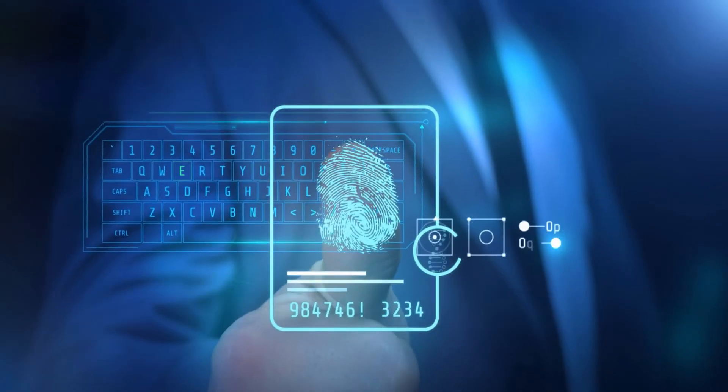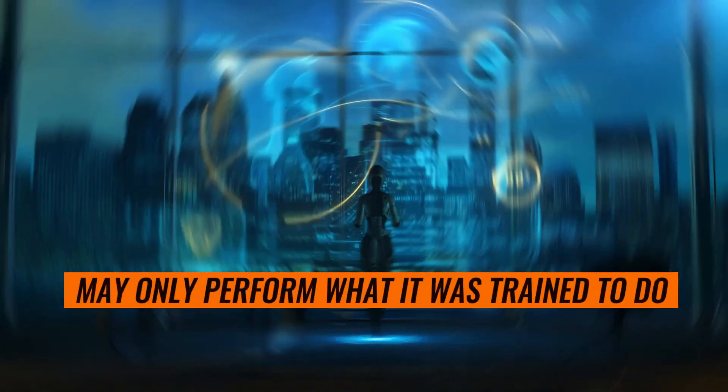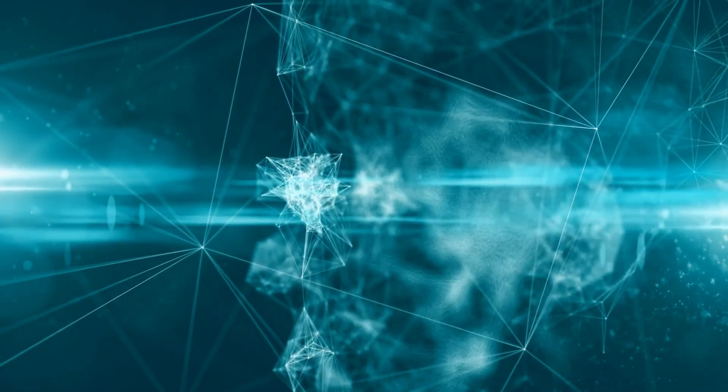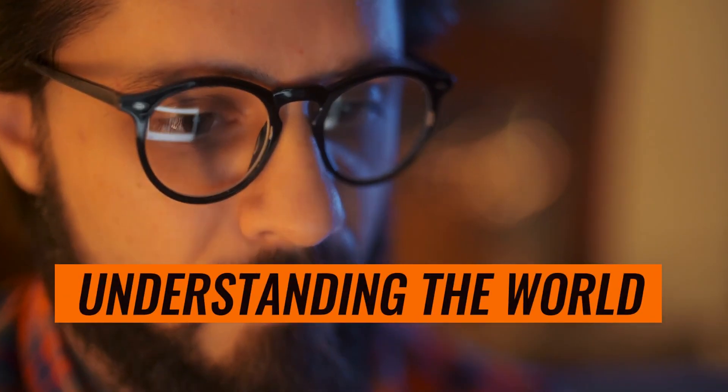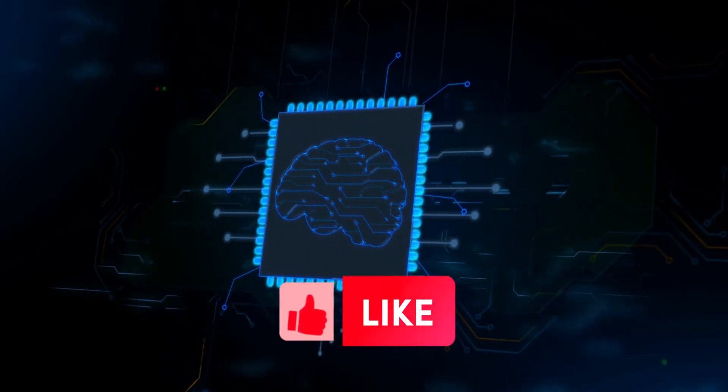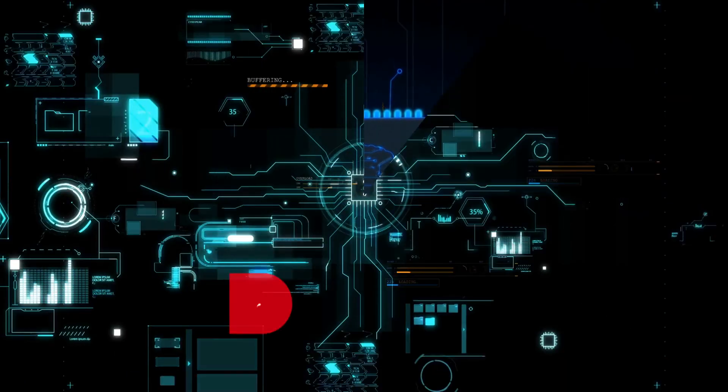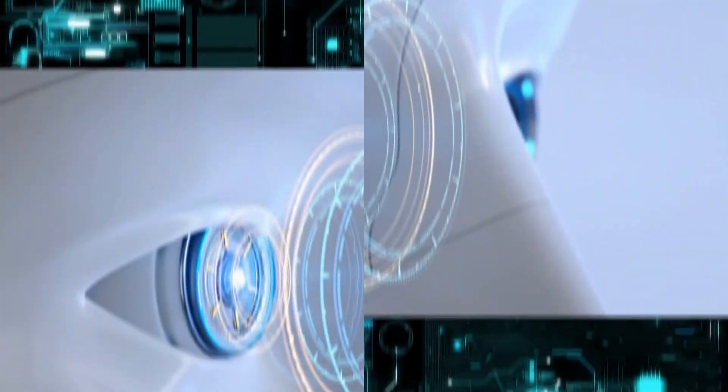It may only perform what it was trained to do. This lack of general intelligence can limit AI's effectiveness in tasks such as decision-making, problem-solving, and understanding the world. Before we move to the next, subscribe to the channel and hit the bell icon to watch more videos like this. AI systems can perpetuate and even amplify biases present in the data they are trained on.